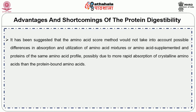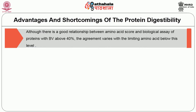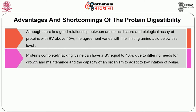It has been suggested that the amino acid score method should take into account possible differences in absorption and utilization of amino acid mixtures or amino acid-supplemented proteins of the same amino acid profile, possibly due to more rapid absorption of crystalline amino acids than protein-bound amino acids. In practice, however, this effect does not appear to be of great importance in cases involving supplementation with small quantities of amino acids. In the case of very poor quality proteins, the amino acid scoring approach has been criticized for non-agreement between amino acid scores and estimates of protein quality based on biological assays. Although there is a good relationship between amino acid score and biological assay of proteins above 40 percent, agreement varies with the limiting amino acid below this level.